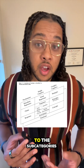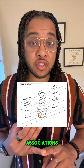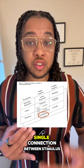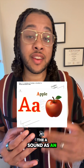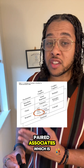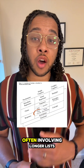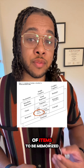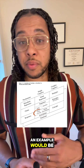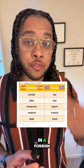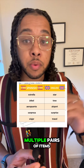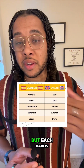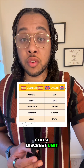The simple cognitive column involves basic memory and recall processes. The subcategories include single associations — learning a single connection between stimulus and response, such as learning that the letter A makes the 'ah' sound as in apple. Then paired associates, which is learning sets of associations often involving longer lists of items to be memorized, like learning vocabulary words in a foreign language where each foreign word is paired with its English meaning. Multiple pairs of items are learned together, but each pair is still a discrete unit.